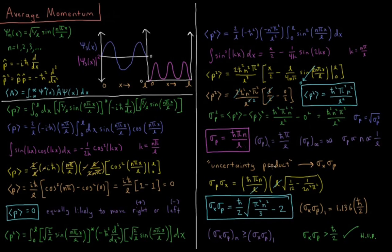Now let's look at the uncertainty product: σ_x times σ_p. This should be familiar as the Heisenberg uncertainty product. We have σ_p = h-bar π n over l, and multiplying by σ_x from the previous video — which was l times the square root of (1/12 minus 1/(2n²π²)) — the l's cancel. After algebraic refactoring, the uncertainty product equals h-bar over 2 times the square root of (π² n² over 3 minus 2). Substituting n = 1, the uncertainty product is 1.136 times h-bar over 2.